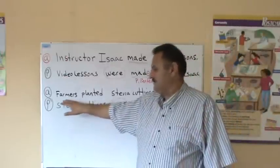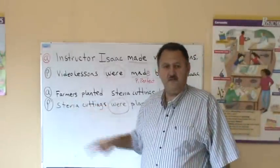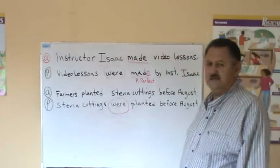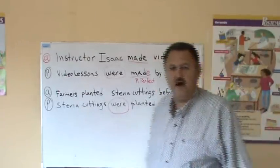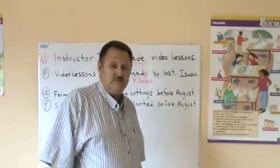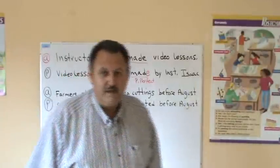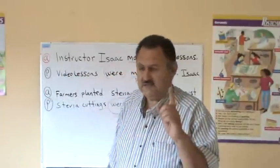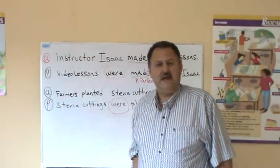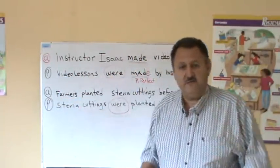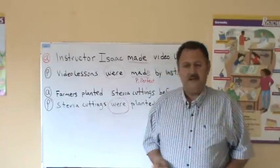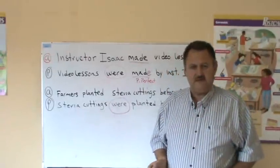In this next sentence: farmers planted stevia cuttings before August. So the important thing here is before August. In this sentence, it's an active sentence, and the focus is on who planted the stevia cuttings.